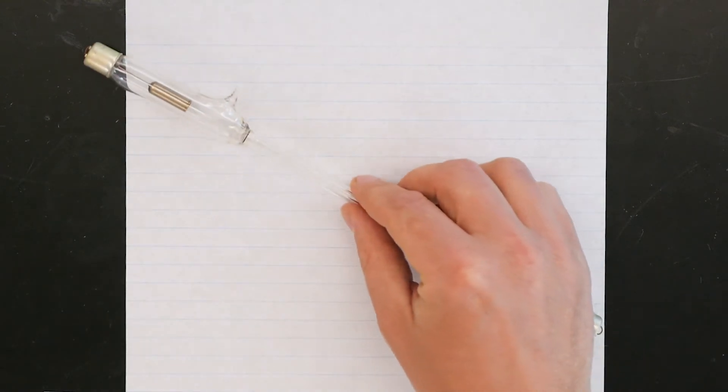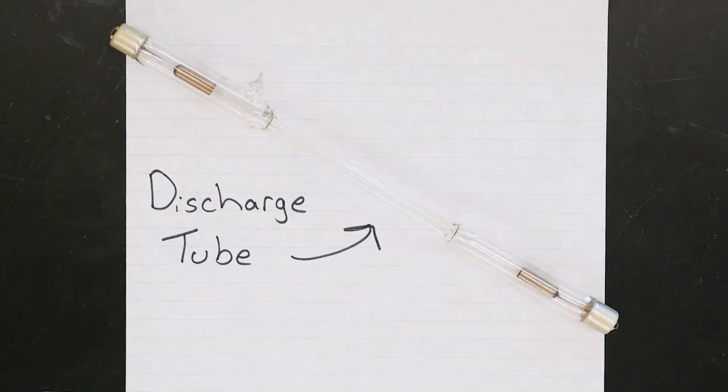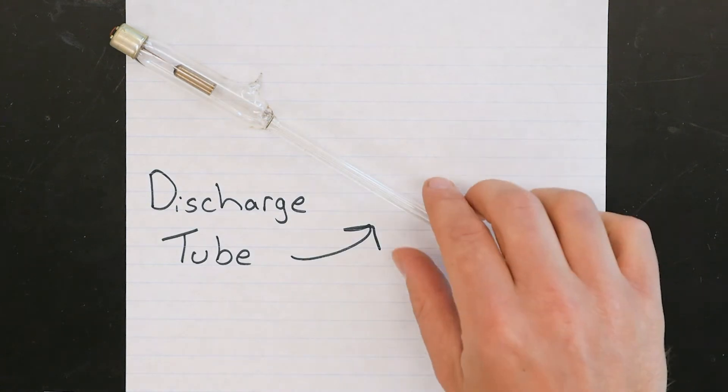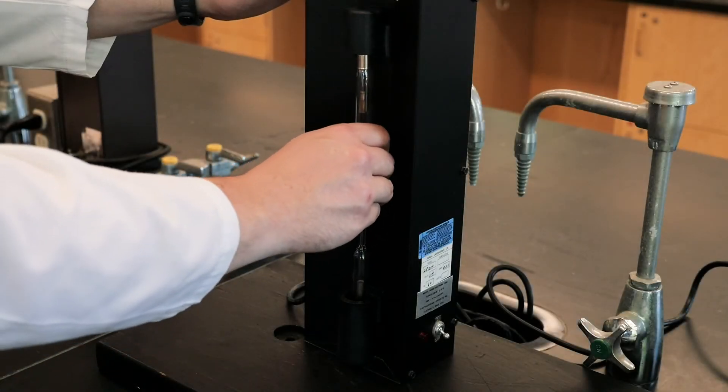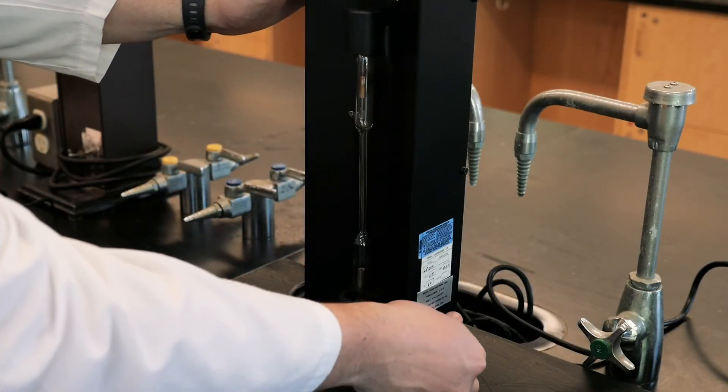To make atoms emit light, we'll be using what's called a discharge tube. This is a glass tube containing only atoms of a particular element in the gas phase. When the tube is connected to a power source, the voltage we apply increases the energy of the atoms inside and causes them to emit light, or glow.